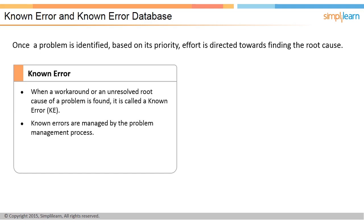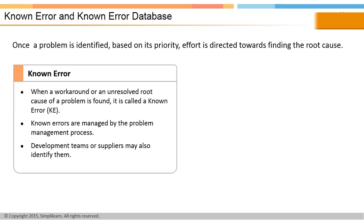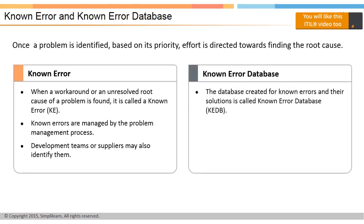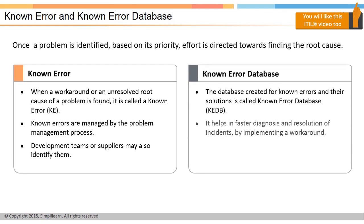Known errors are managed throughout their lifecycle with the problem management process. Development teams or suppliers may also identify known errors — for example, application incompatibility reports for Windows by Microsoft. A database is created for known errors, workarounds, and their solutions; this database is called the Known Error Database, or KEDB. It helps in faster diagnosis and resolution of incidents.